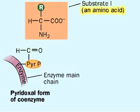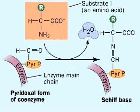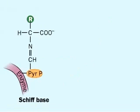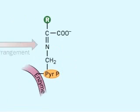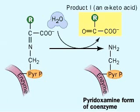An amino acid that will donate an amino group to another compound binds to an enzyme by forming a Schiff-base linkage to the pyridoxal phosphate coenzyme. The Schiff-base rearranges, allowing an alpha-keto acid to split out, leaving the pyridoxamine form of the coenzyme.